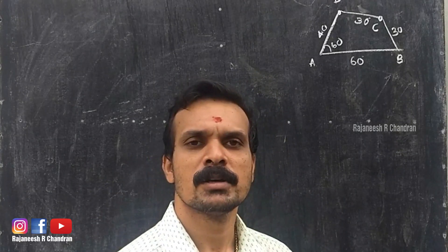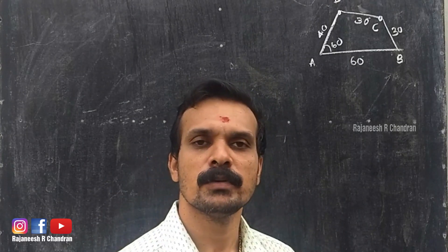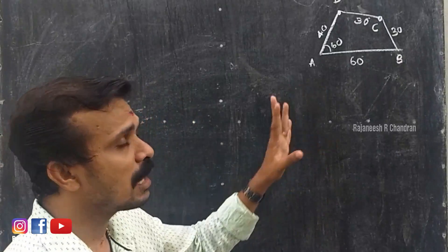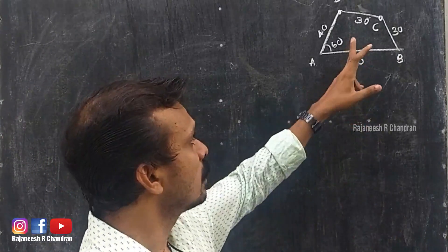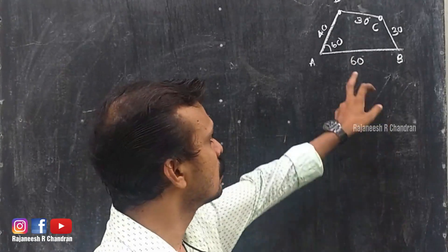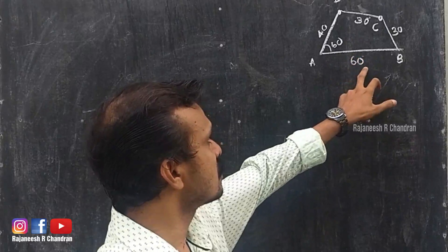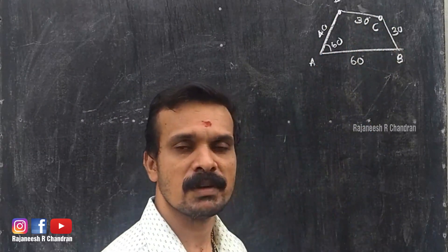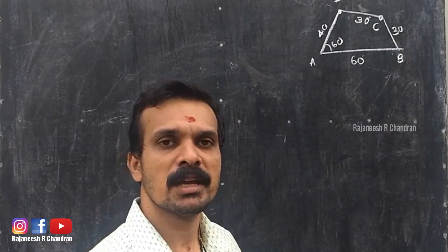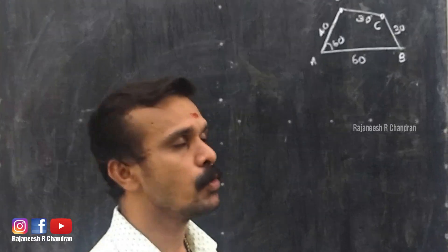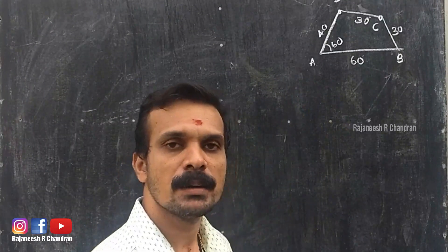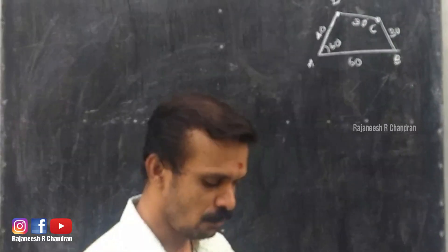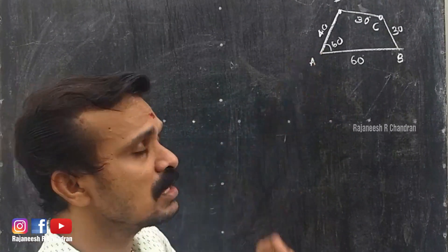We are moving to another problem where a lamina — a quadrilateral — is given. This distance is 60, this is 40, this angle is 60 degrees, and 30 and 30 are given. We have to draw the isometric view of this particular lamina, parallel to HP and parallel to VP.